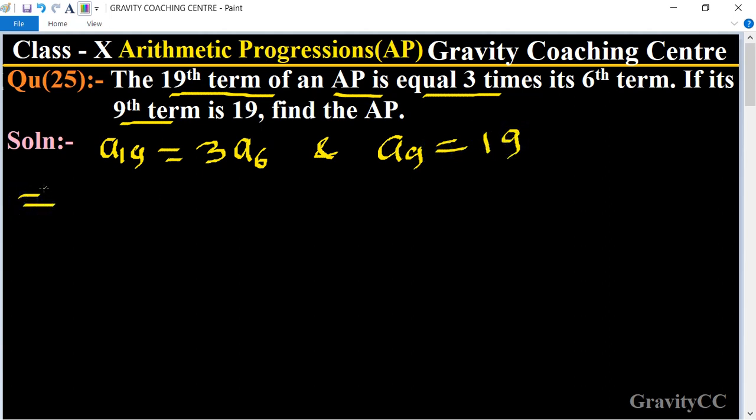So a₁₉ means a plus 18d equals three times a plus 5d, which implies that a plus 18d equals 3a plus 15d.